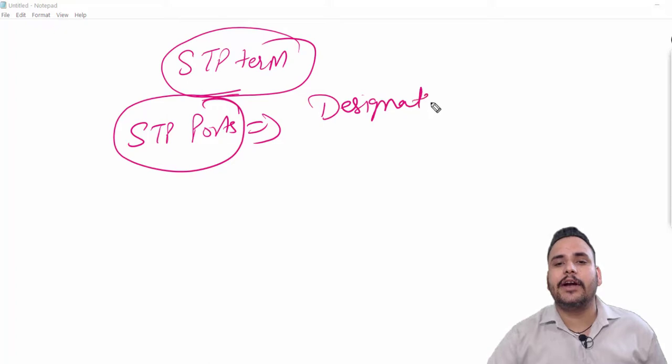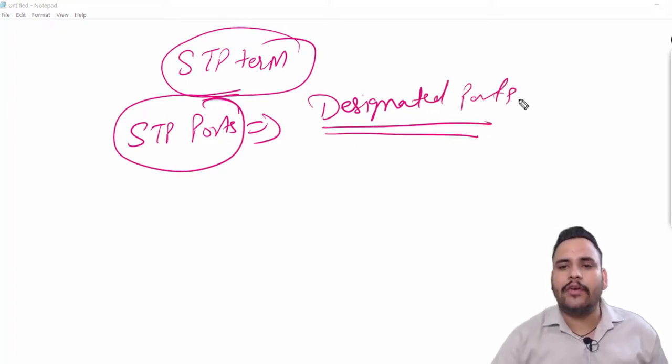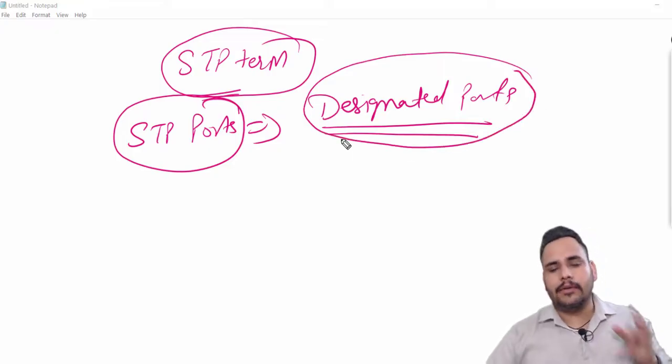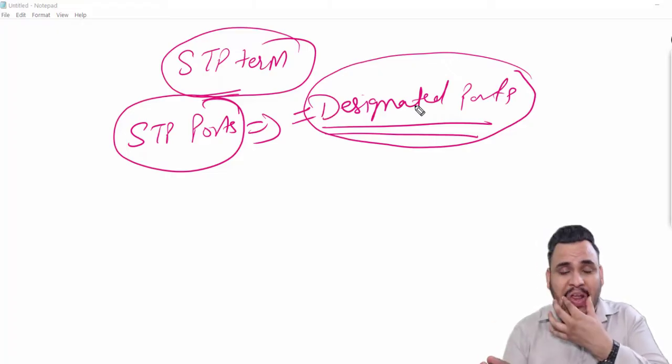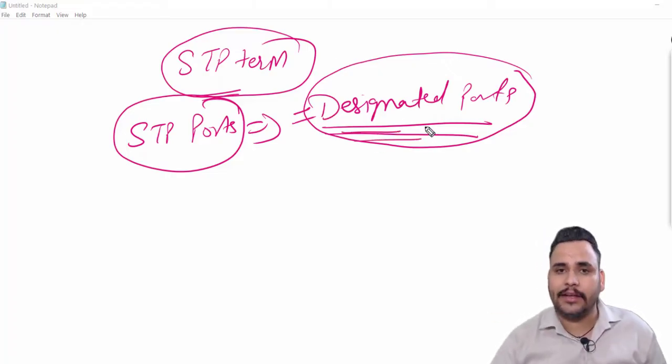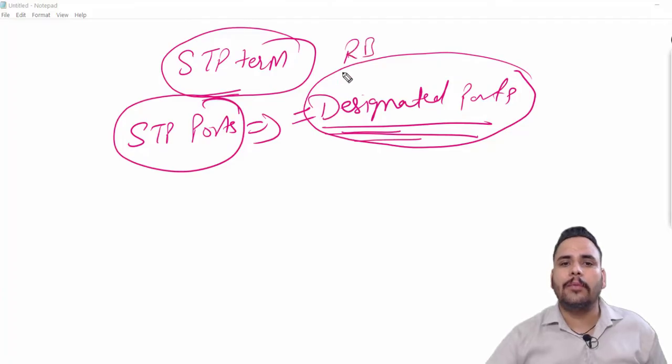Port number one is known as designated ports. Designated ports are always forwarding ports and all the ports of root switch are designated. Designated ports are those who can send information and receive information at one time. So root bridge all ports are designated.